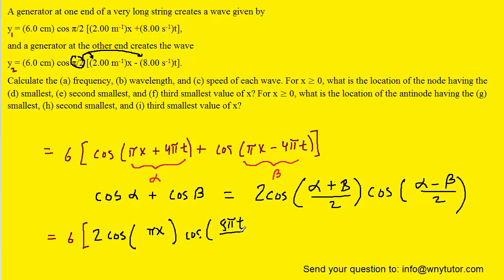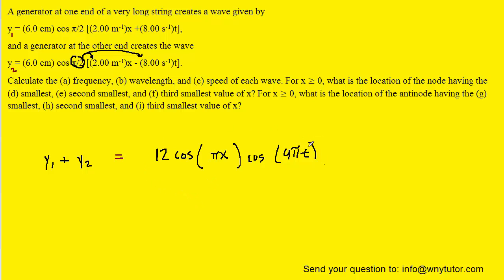So we're going to have the cosine of 8πt, but again, because we're going to divide by 2, this will actually become 4πt. And then at this point, we can multiply the 6 by the 2 to make 12. And so this would be our final expression for y1 plus y2.